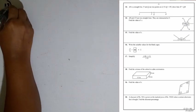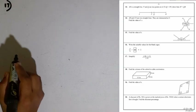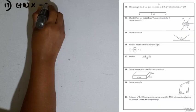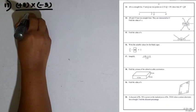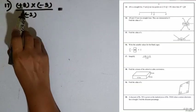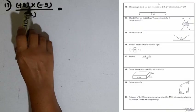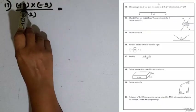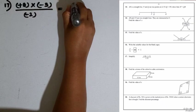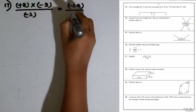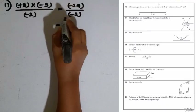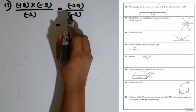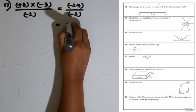Question number 17: simplify plus 8 multiplied by minus 3, divided by minus 2. First simplify the numerator: plus 8 multiplied by minus 3 — a positive integer times a negative integer gives a negative result: minus 24. Then divide minus 24 by minus 2. Two negative integers divided give a positive result: 24 divided by 2 is 12. The answer is plus 12.